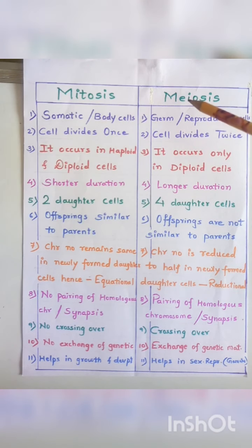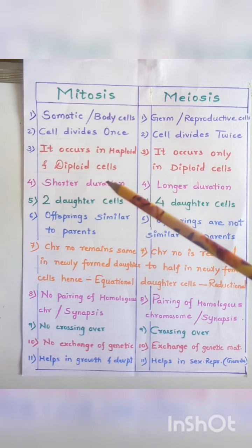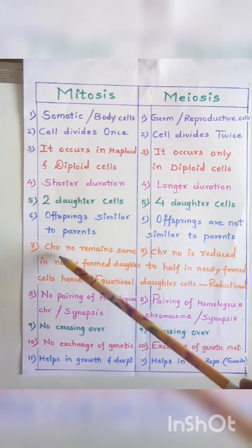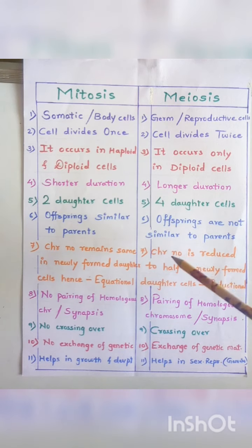Another difference is that in mitosis the offspring produced are similar to their parents, whereas in meiosis the offspring produced are not similar to their parents. In mitosis, the chromosome number remains the same.